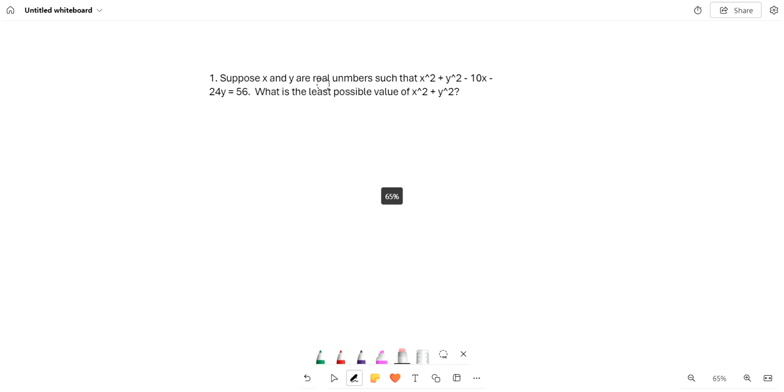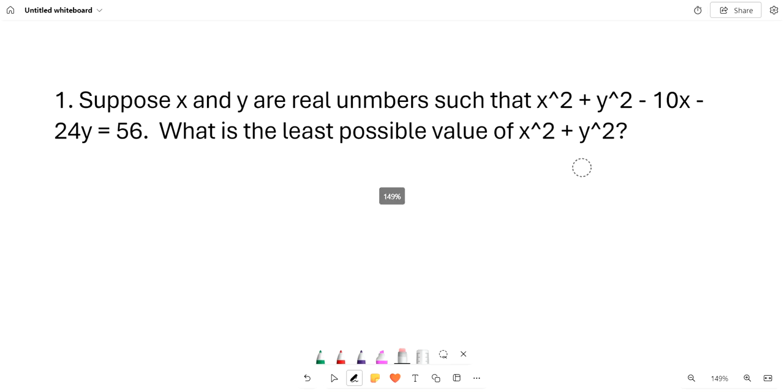So this is week 3242 quiz, and number 1 says, suppose x and y are real numbers such that x² + y² - 10x - 24y = 56. What is the least possible value of x² + y²?